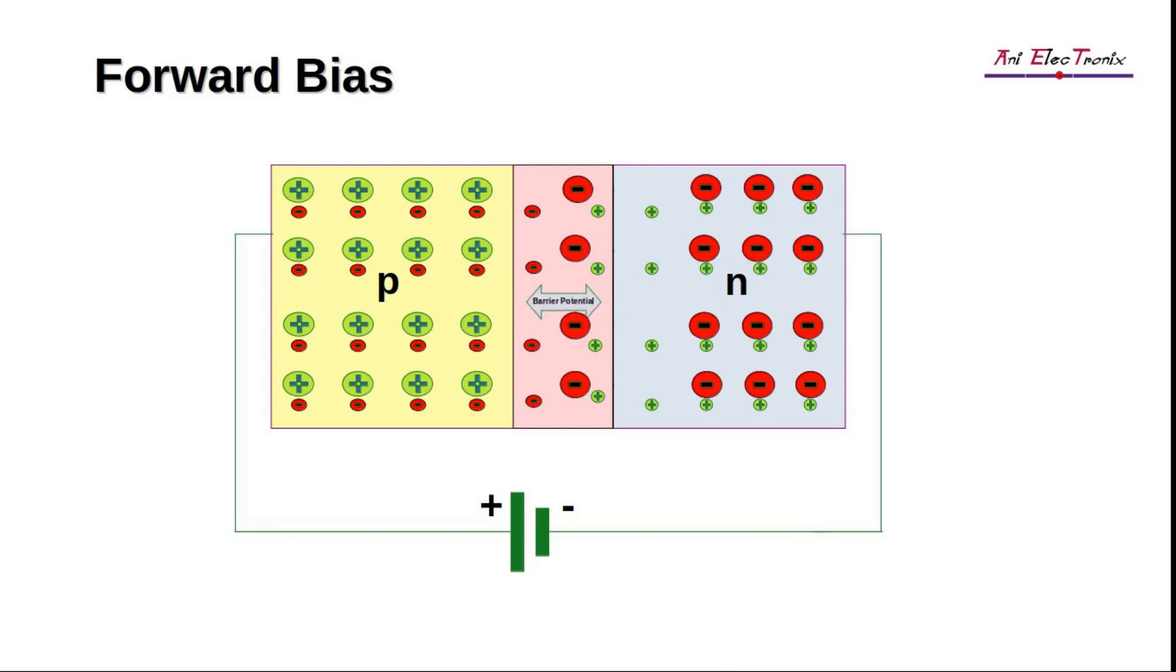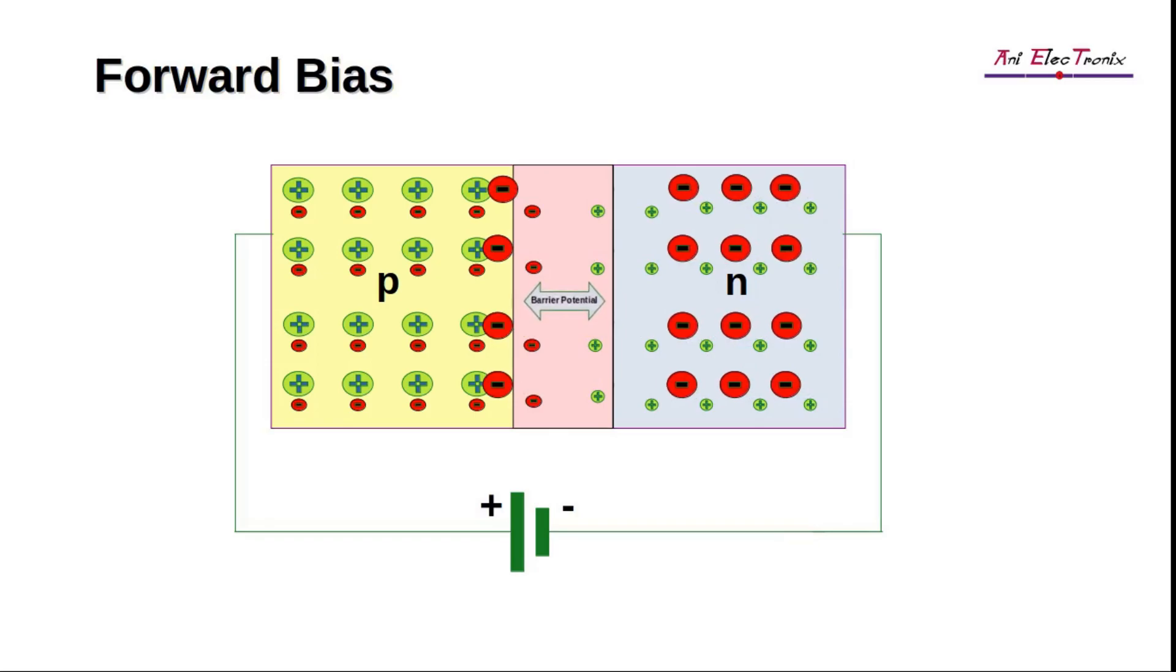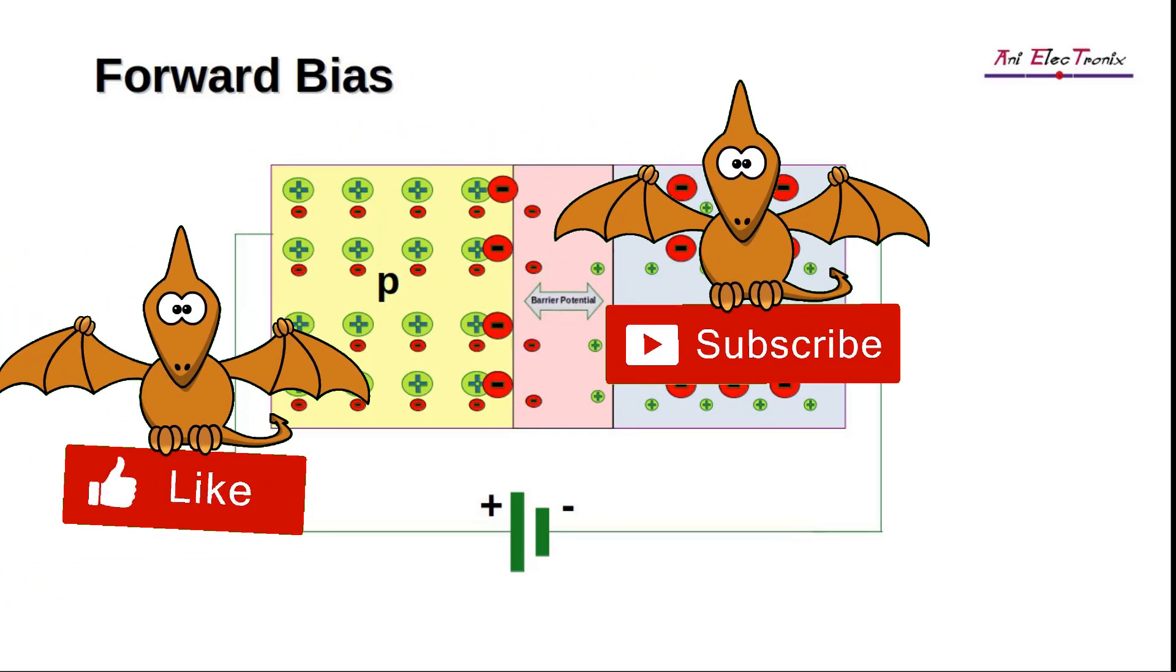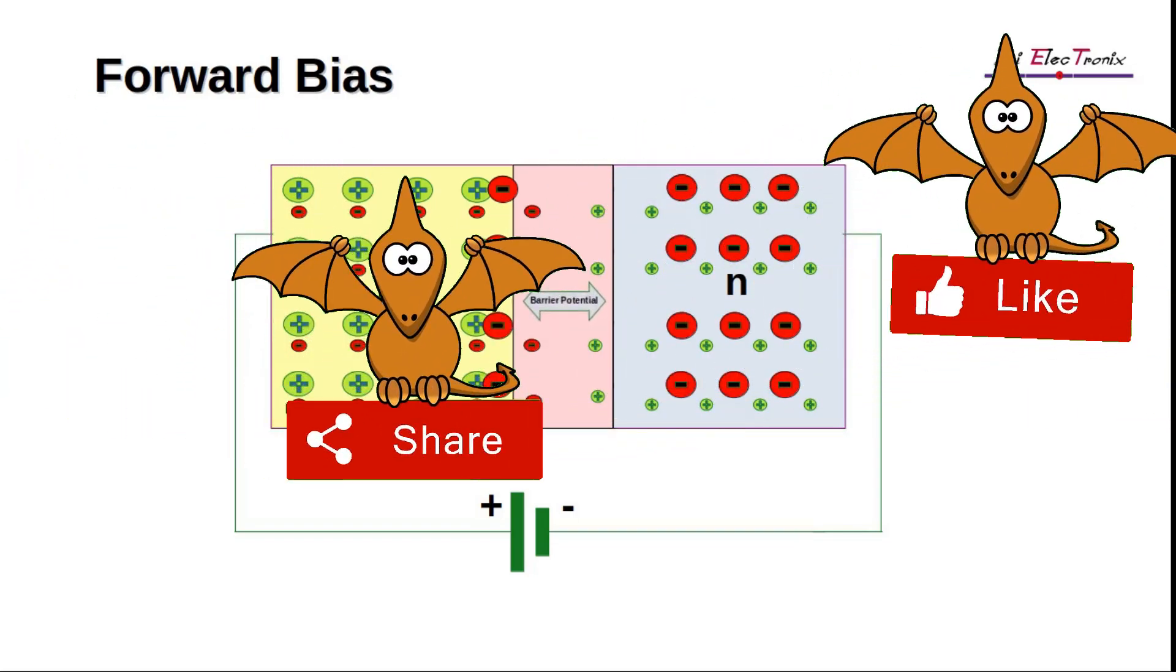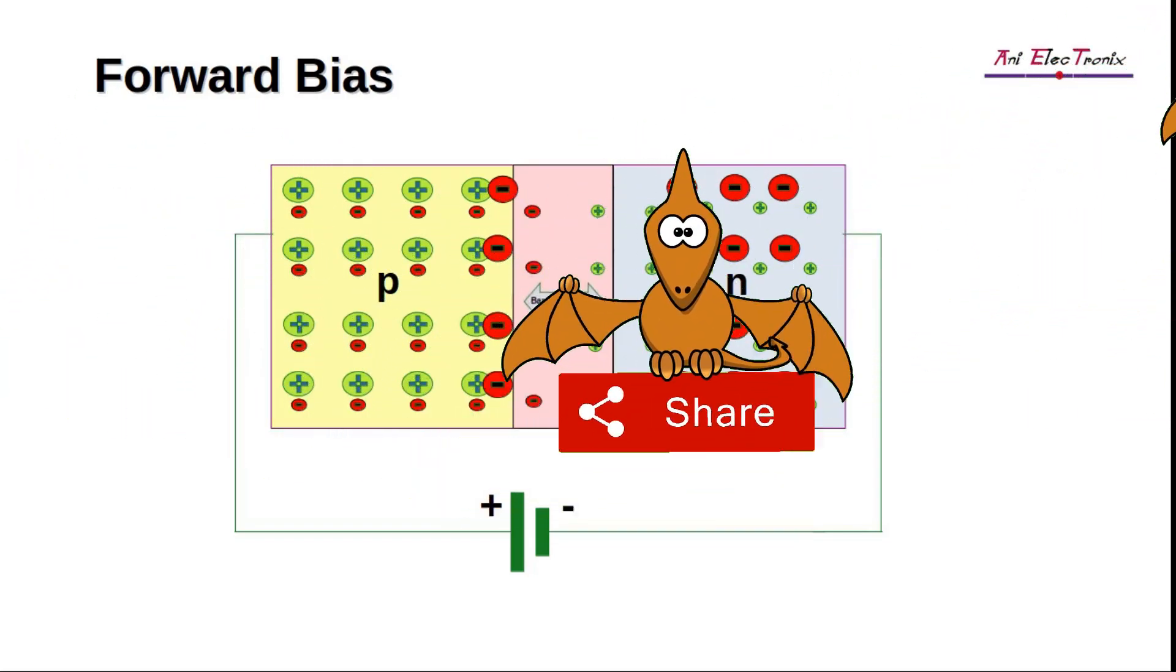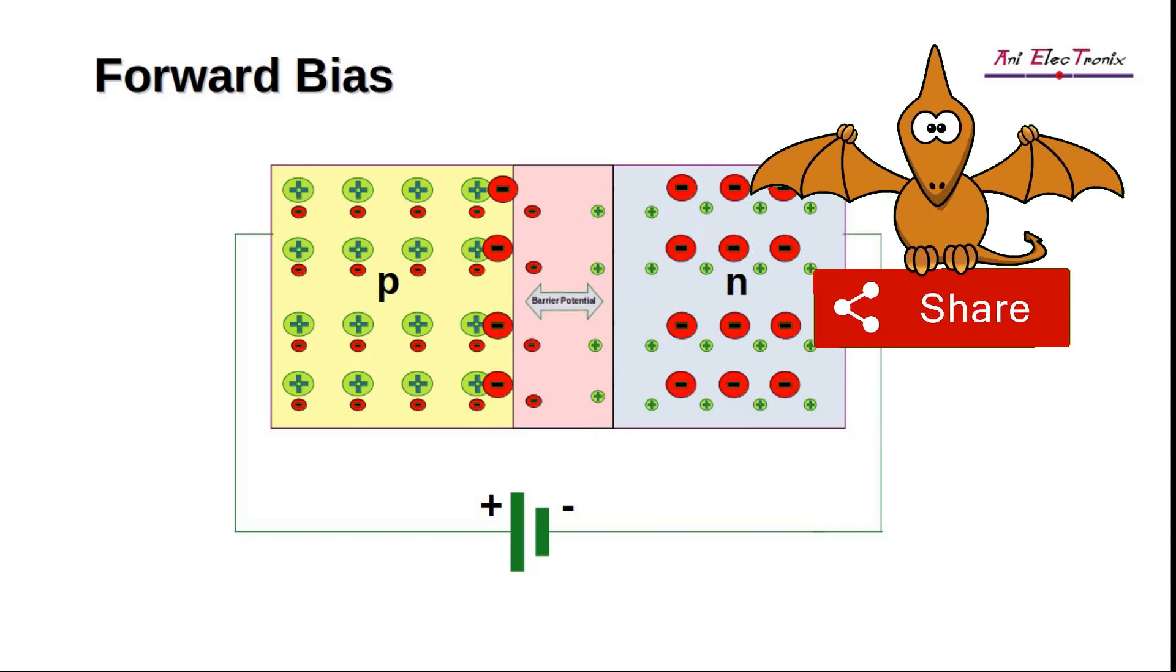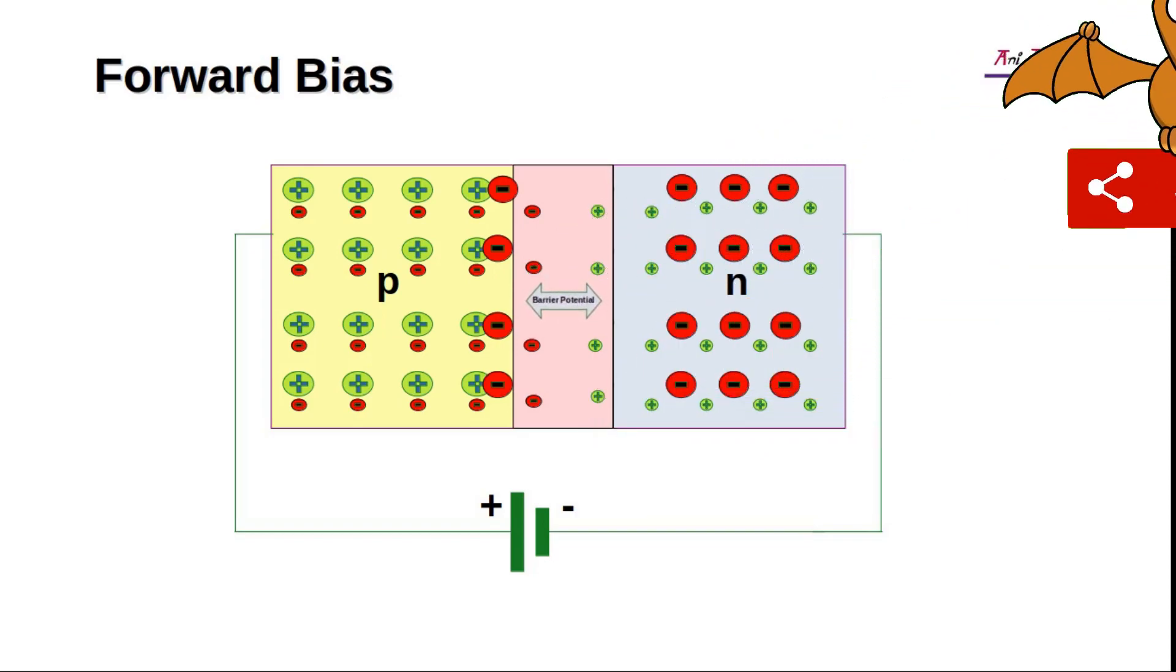As a large number of charge carriers try to move to another region, they will be gathered near the depletion region before they recombine with the majority carriers. This results in a large amount of charge accumulating on both sides of the depletion region. A very narrow depletion region separates these charge carriers. As we have seen, the depletion region of a capacitor acts as the dielectric medium and the charge stored on both sides of the depletion region acts as the conductor plates. Capacitance of this type is called diffusion capacitance.